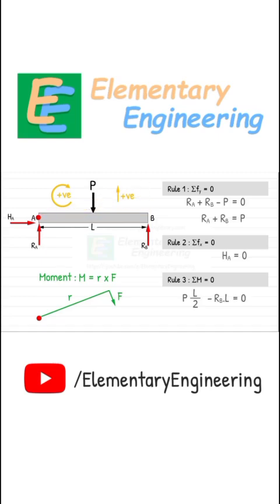From here we can determine RB as P by 2, and by substituting this in our first equilibrium equation, we get RA as P by 2 also.